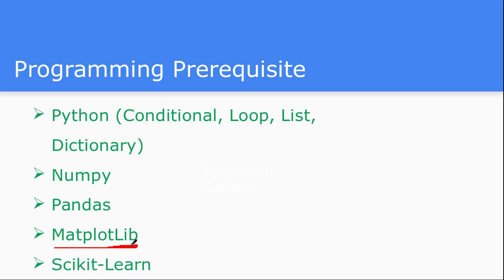The last one is Scikit-learn — the actual machine learning library where a lot of machine learning algorithms are implemented, such as regression, logistic regression, linear regression, unsupervised classification algorithms like hierarchical clustering or k-nearest neighbor, and some neural network algorithms. These are all implemented inside this library, and it is one of the very famous libraries among the machine learning community. These are the minimum bare prerequisites from the programming perspective before starting machine learning coding.